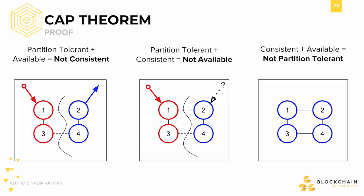We lose out on something in the last two examples, so let's see what happens when we choose consistency and availability. I send an update to Node 1. Node 1 passes the information around. I query Node 2 and it returns a value to me. Great — everything worked as expected. Except there's one problem: if we throw in a partition, this wouldn't work. If we throw in a partition, we're forced into one of the first two situations. This proof demonstrates the spirit of the CAP Theorem — that a system must compromise.